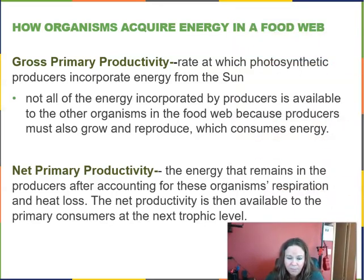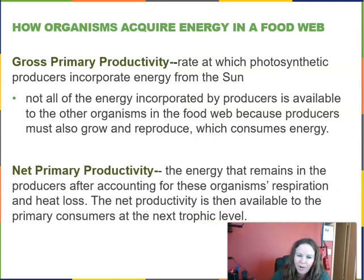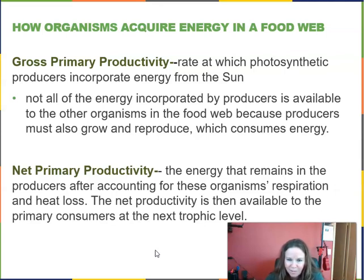Gross primary productivity is the rate at which photosynthetic producers incorporate energy from the sun. Not all of that energy is available to other organisms, because producers need to grow, reproduce, and consume energy themselves. Net primary productivity is the energy that remains after producers are done with what they need — it's what's available to all the rest of the organisms in the food web and food chains. Think of it like a paycheck: gross is the full amount, but net is what you actually take home.